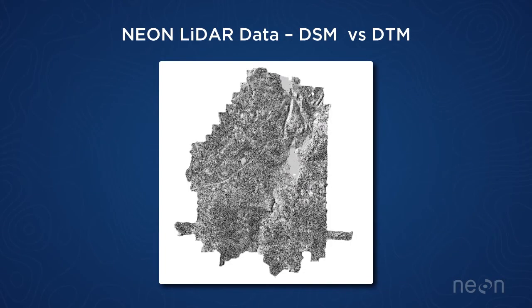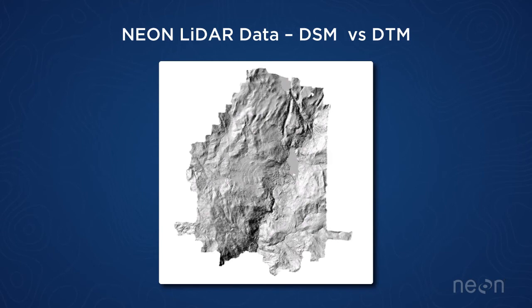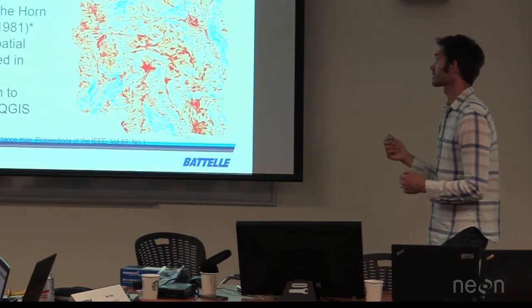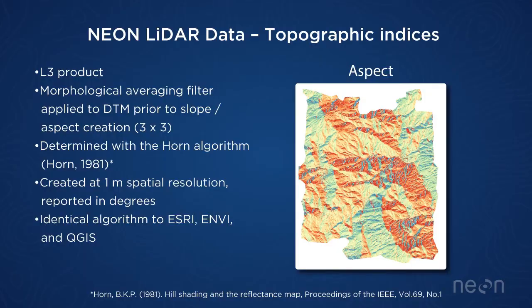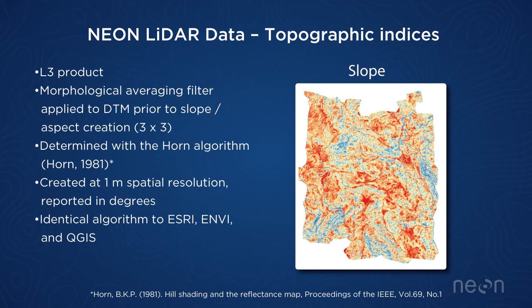This animation shows the difference between the DTM and the DSM by removing those vegetation points. We also create slope and aspect rasters from the digital terrain model — also L3 products. Slope is measured in degrees, and aspect is the direction of the steepest slope, measured in degrees between 0 and 360. Both come from the Horn algorithm, the same one used in popular remote sensing packages like ArcGIS, QGIS, and ENVI. These are produced at one meter and delivered in one-kilometer by one-kilometer tiles.